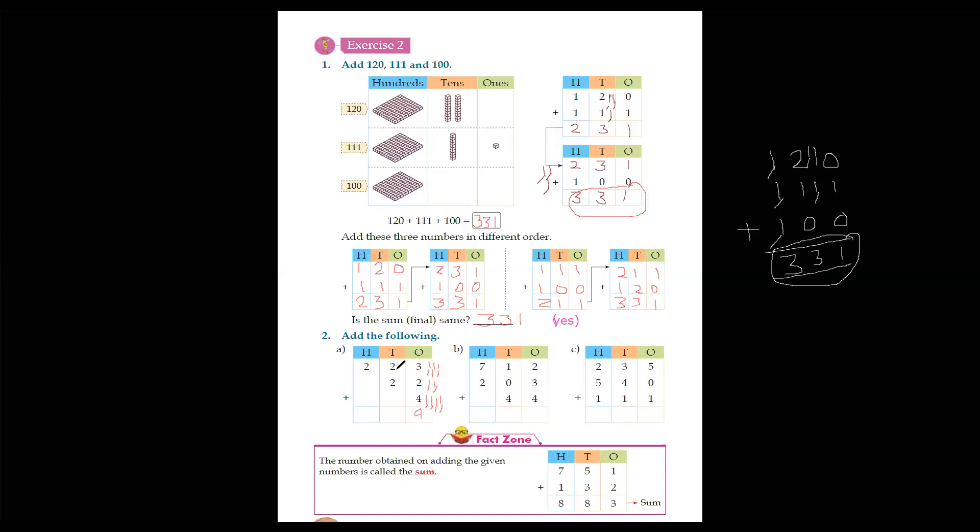2 plus 2. 2 lines down, 2 lines. 1, 2, 3, 4. What came to count? 4. We have to write 2 because we don't have any number.